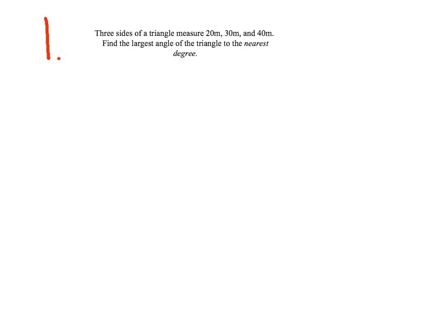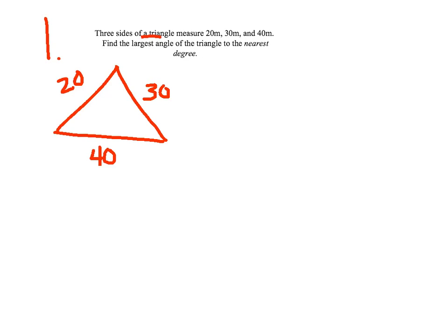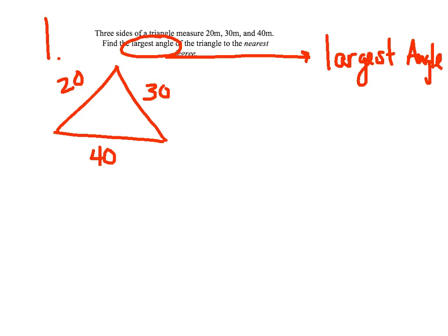Example 1: Three sides of a triangle measure 20, 30, and 40 meters. Find the largest angle to the nearest degree. Let's go ahead and make a quick sketch. We know our three sides are 20, 30, and 40. The question wants the largest angle. Where do you find the largest angle? The largest angle is across from — or opposite — the largest side.